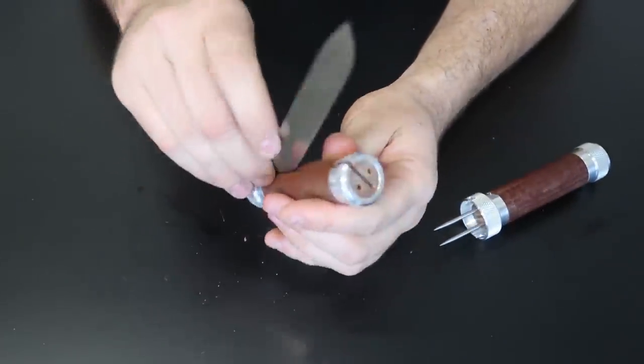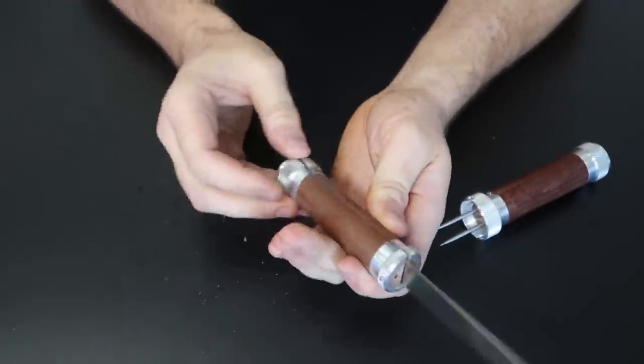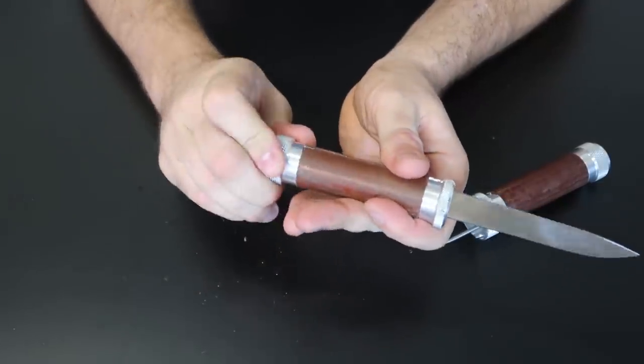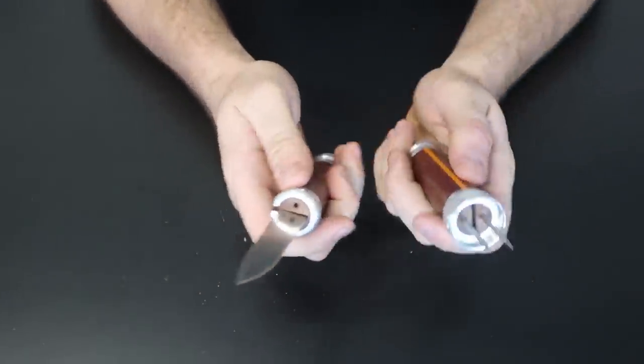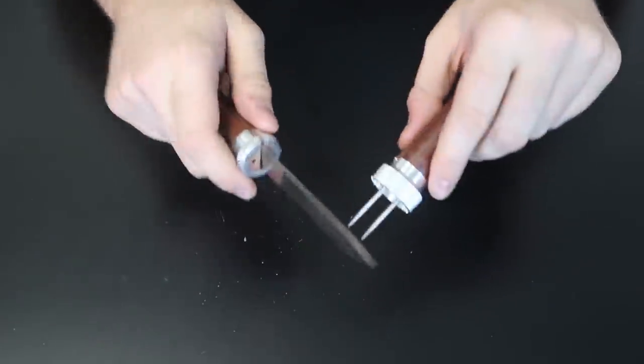So, once again, once you're done, just flip it over, twist this so it does not come off, and now you have a shorter knife and a fork.